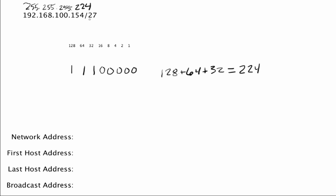What we did there is we converted that slash 27 into dotted decimal. It helped us understand the relationship between 224 and those three ones. We knew that 8 plus 8 plus 8 is 24, leaving three bits to get to 27 — those three ones indicating the three network bits, which are borrowed from what originally would have been host bits if this was a class C address. We've made these now network bits.